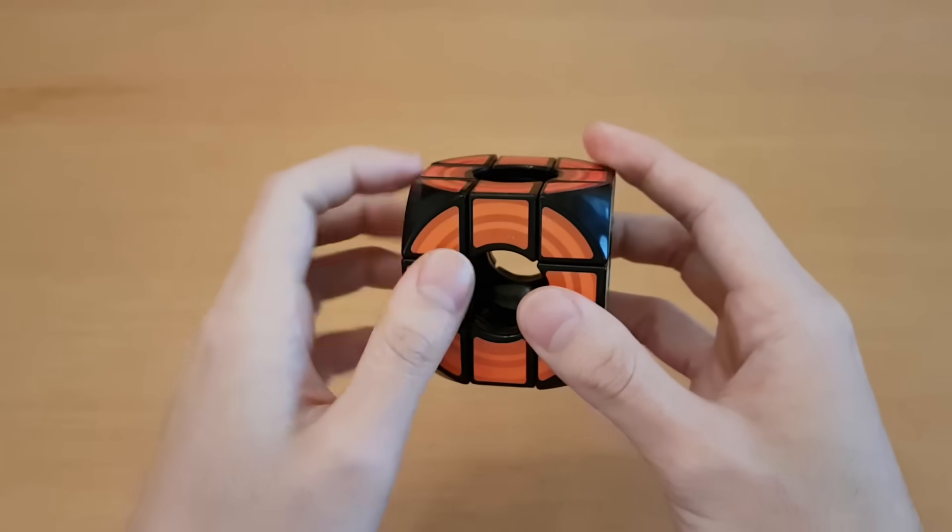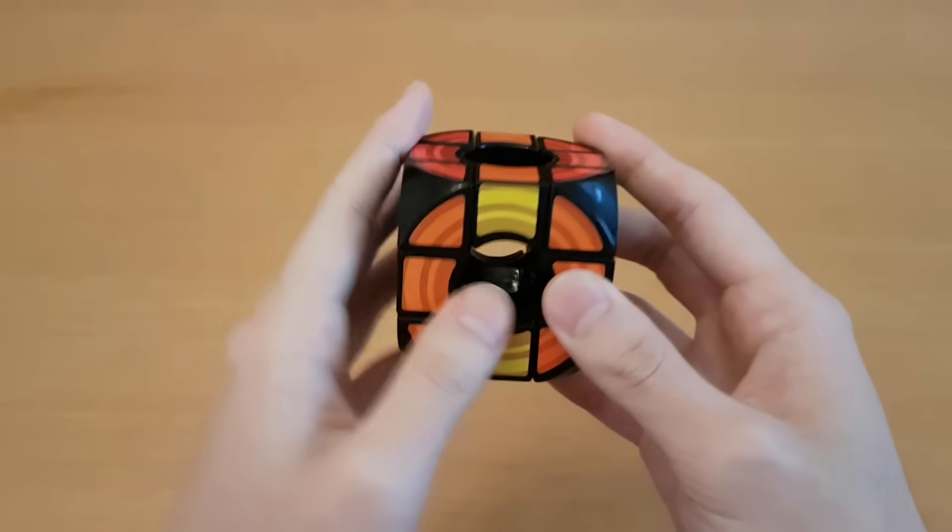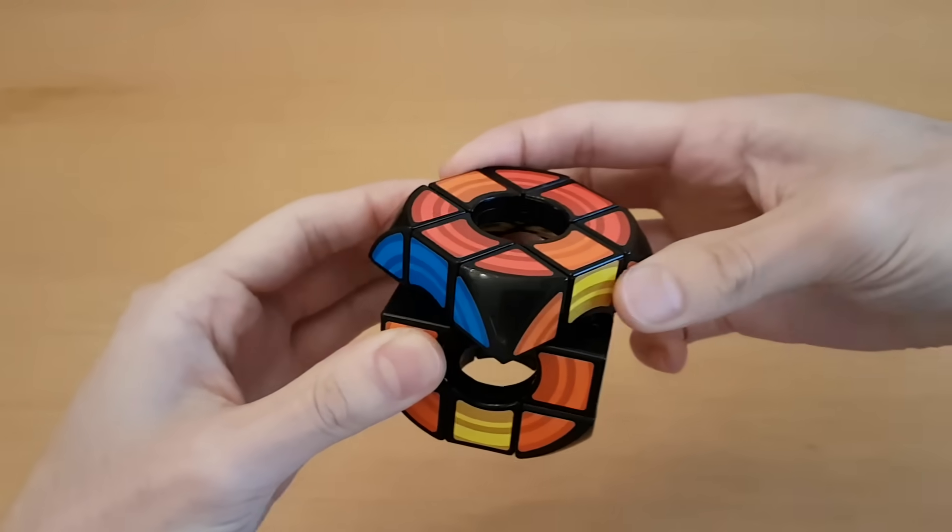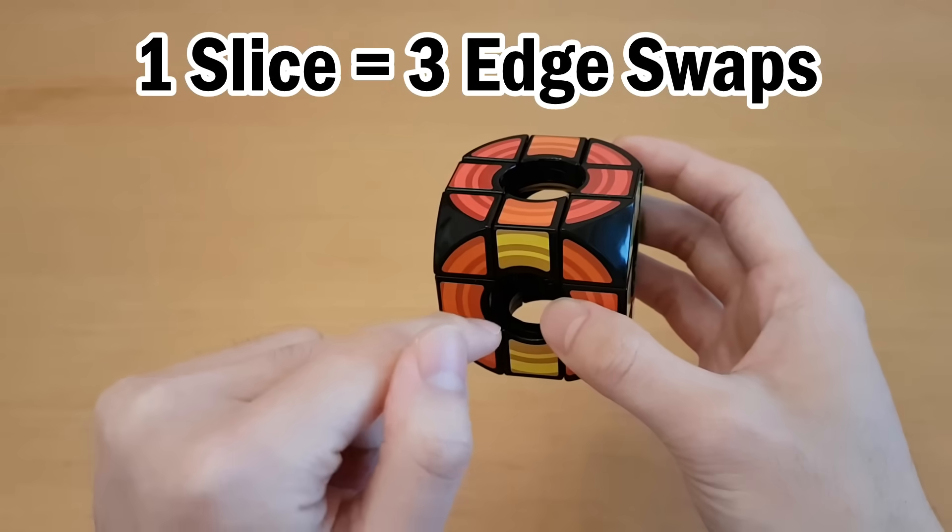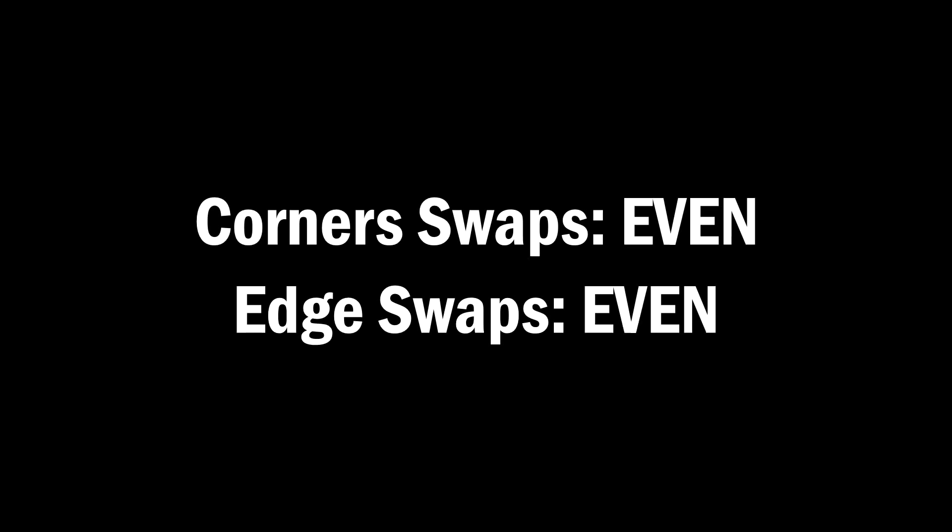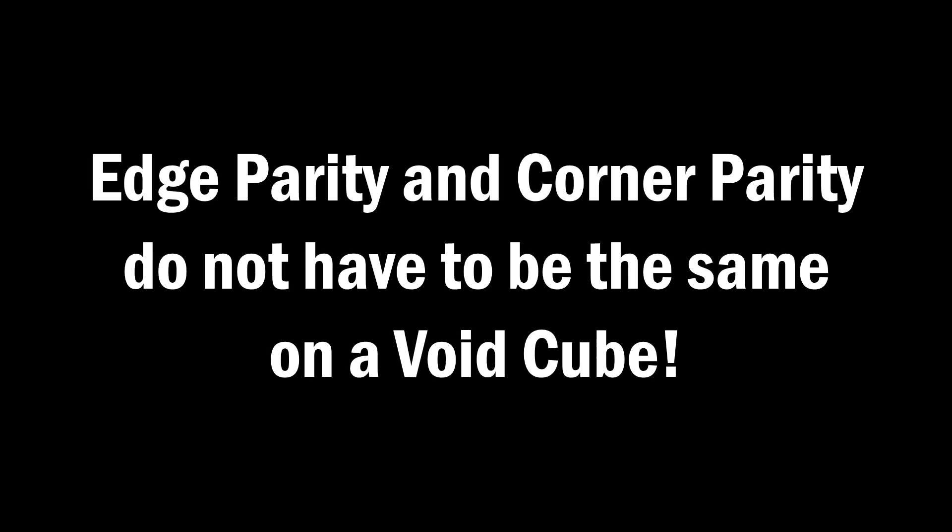So let's think about what a slice turn does. There are four edges along here. And if you do a slice turn, you cycle those four edges the same way you would if you just did an outer turn. Therefore, this is also just doing three swaps of edges. But notice that when we did this, we didn't swap any corners. Which means that now we're moving the edges independently of the corners. And that allows the edges to keep switching between odd and even while the corners stay the same. This means edge parity and corner parity do not have to be the same on a void cube. So if they don't have to be the same, that means one of them can be one, and one of them can be zero. And that means just one swap of corners, or just one swap of edges, is possible on a void cube.